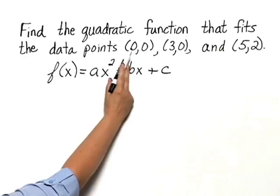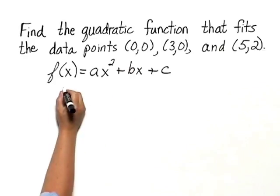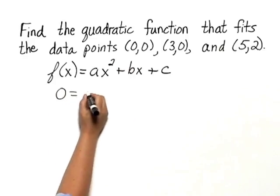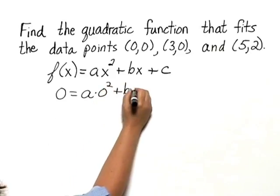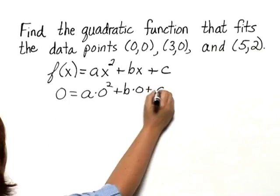If f of 0 is 0, then we have 0 equals a times 0 squared plus b times 0 plus c.